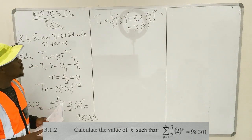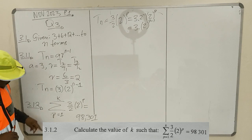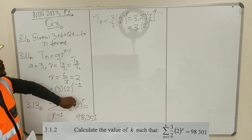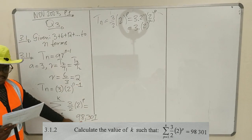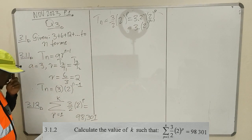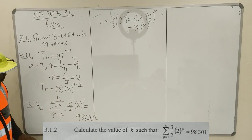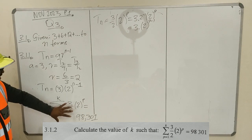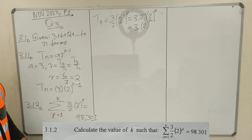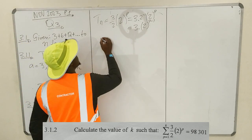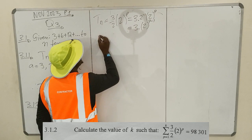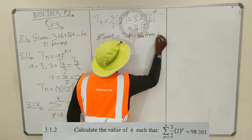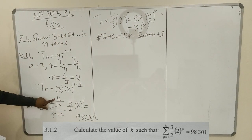Now you want the value of K. K is the upper limit of the summation. You know that when you sum terms from P equals 1 to K of this general term, they give you 98,301. The number of terms is found by: top minus bottom plus 1. So the number of terms equals K minus 1 plus 1, which equals K terms.